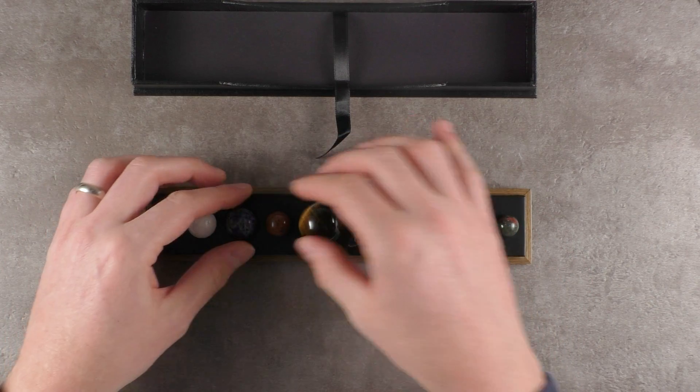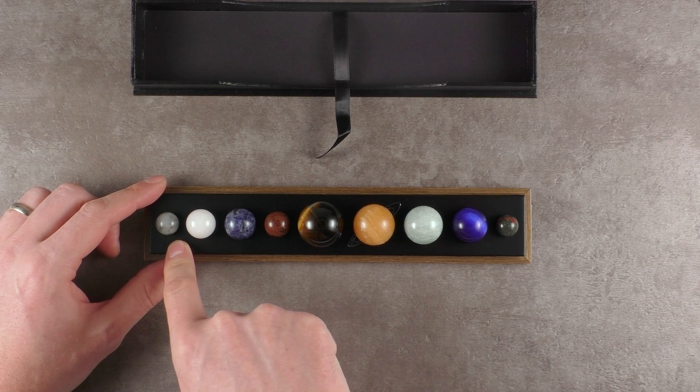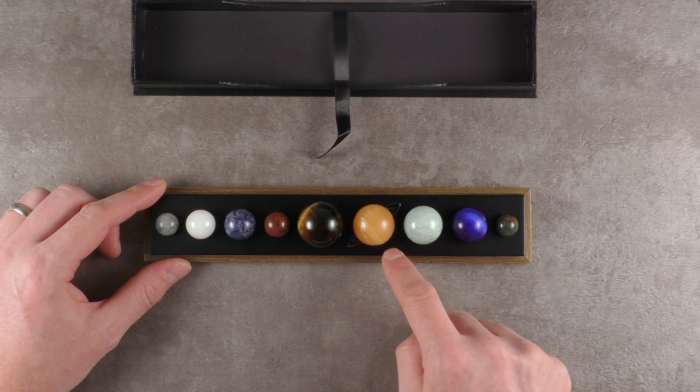But if you look at these and how well these are made, this is just so satisfying. So this is Mercury, Venus, Earth, Mars, Jupiter, Saturn.